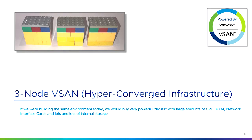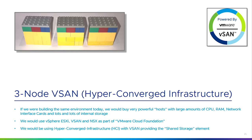We buy some powerful hosts with lots of CPU, RAM, network, and lots of internal storage. vSphere ESXi comes with a technology called vSAN, which can take any storage in each vSphere host and turn it into a shared pool of storage that looks much like a traditional storage array. This is called hyperconverged infrastructure, or HCI, because vSAN is providing the shared storage element. One of the most common ways of doing this is to use VMware Cloud Foundation — a combination of vSphere ESXi, vSAN, and NSX as a solution for doing all of these things on a common platform.